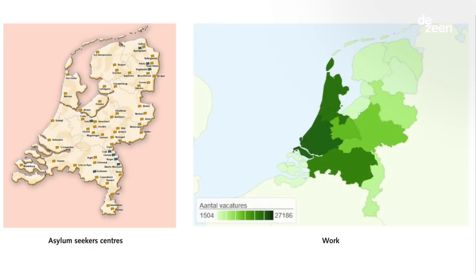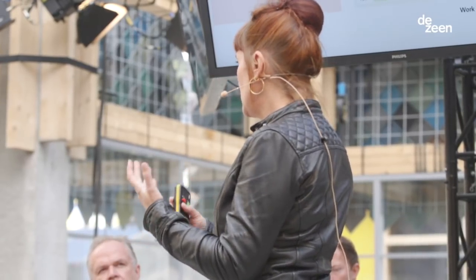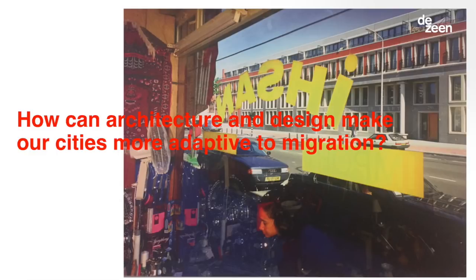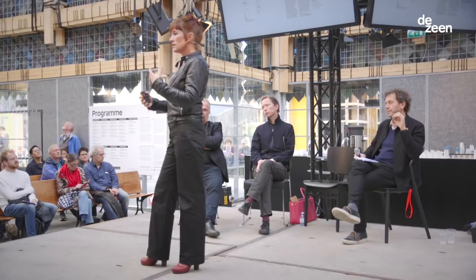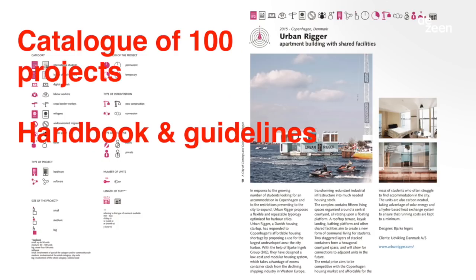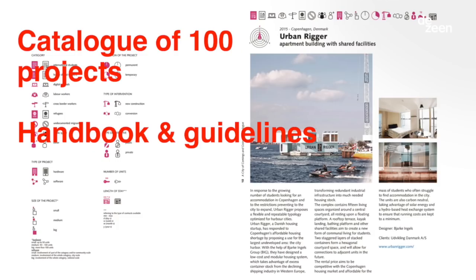This has a lot to do with spatial affairs. In the Netherlands and Germany, asylum seekers are housed on the borders, completely outside the areas where work and economic possibilities exist. People are given the idea of chances to integrate and find work, but spatially they are prevented from doing so. The main question that interests us is: how can architecture and design make our cities more adaptive? We are looking into what solutions designers, architects, and policy designers can apply, leading to a handbook and guidelines.